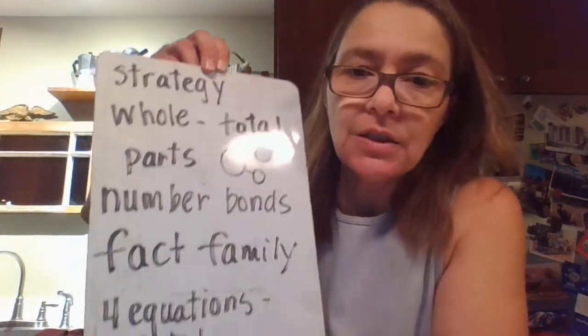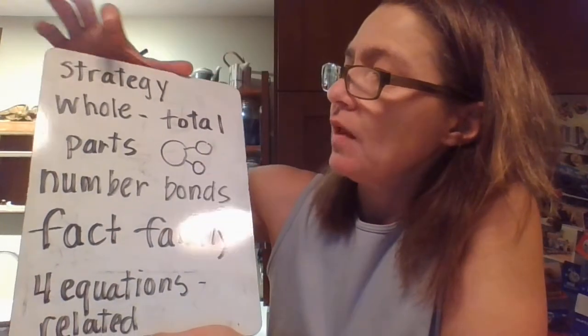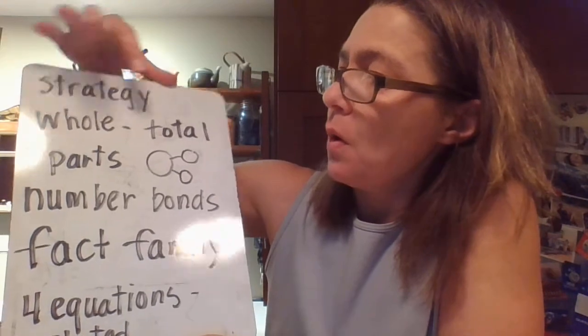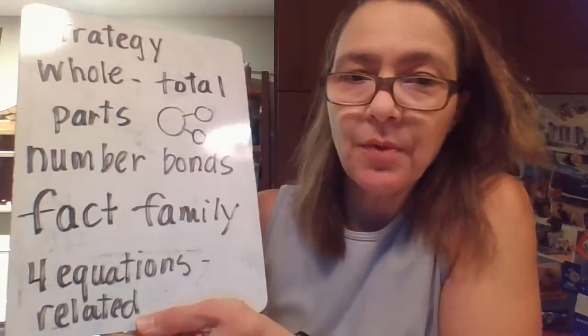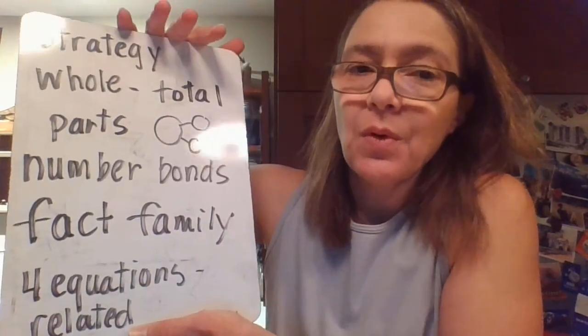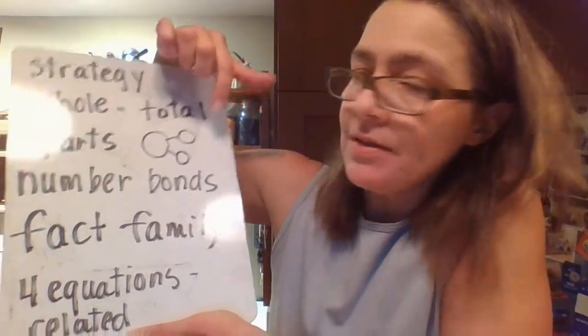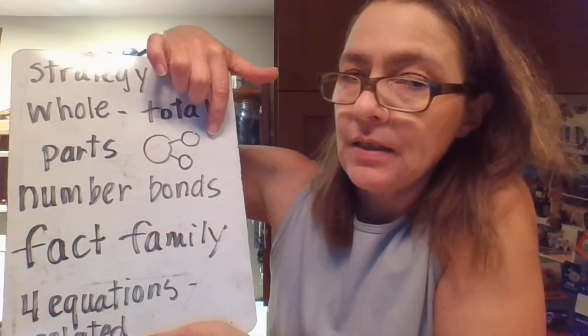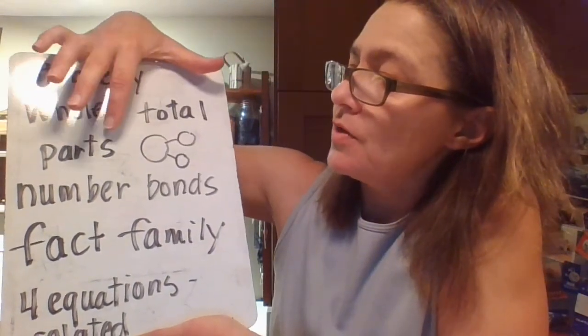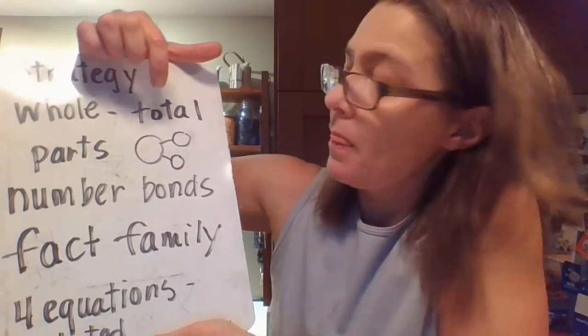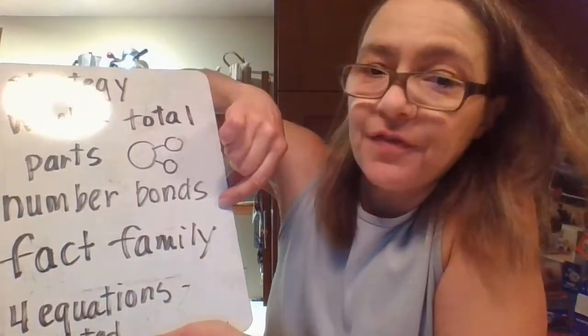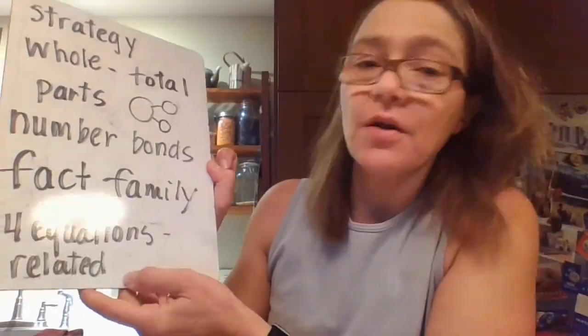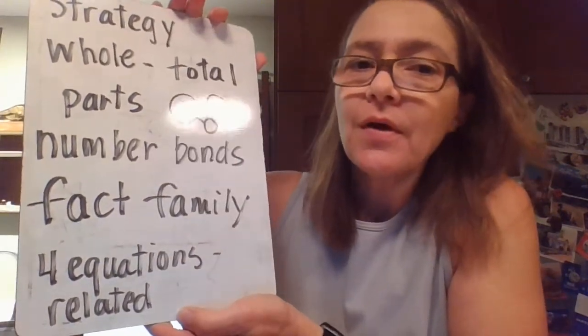Some words you need to know: strategy — that's a plan of action, something you do that works every time. The whole means the total. Remember our basic facts don't total more than 20. You might remember number bonds — two parts equal a total. Today we're going to learn about fact families: four equations that are related because they have the same total. Start on page 33 and do the solve and share on your own.